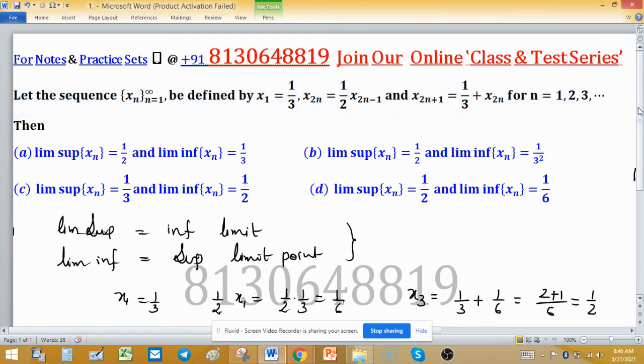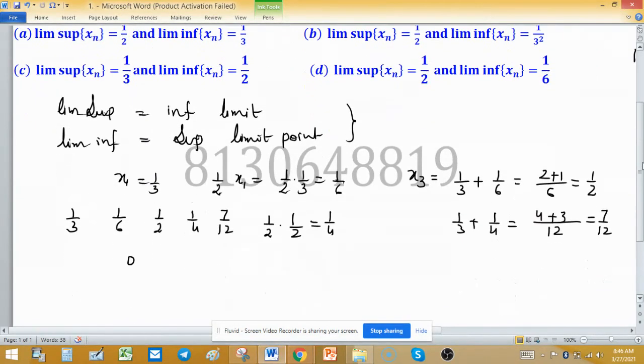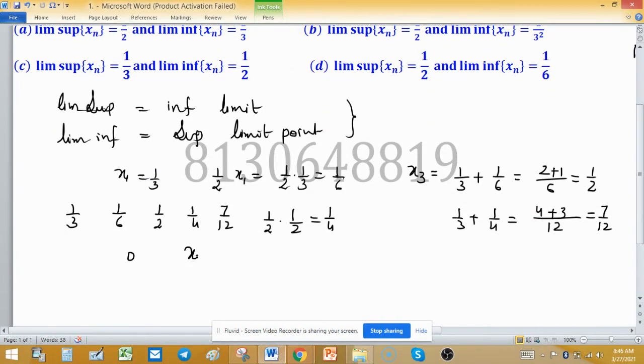All terms are near about 2, so all xn either less than equal to 2 or greater than equal to 0. So, we have 2 bounds: 0 and 2. When sequence is bounded, now sequence is bounded.